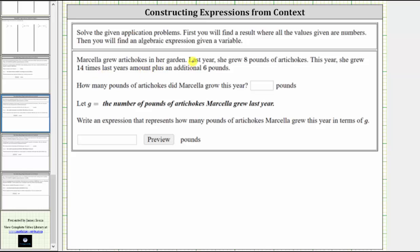Marcella grew artichokes in her garden. Last year she grew eight pounds of artichokes. This year she grew 14 times last year's amount plus an additional six pounds. How many pounds of artichokes did Marcella grow this year?